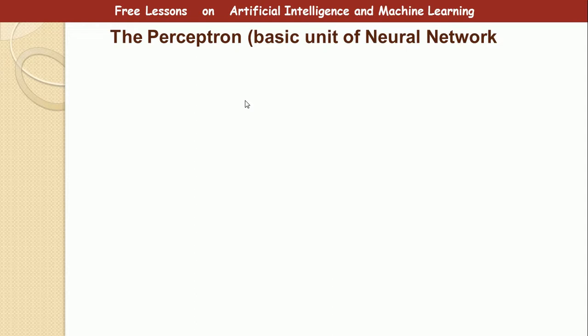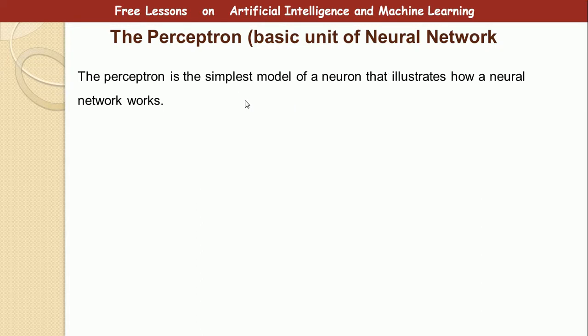That is about network parameter optimization. You are optimizing the W parameter or the weight parameter. Now, what is a perceptron? Well, a perceptron is also a neural network but is the basic unit of the neural network. A perceptron is the simplest model of a neuron that illustrates how a neural network works. This is an example of a perceptron.